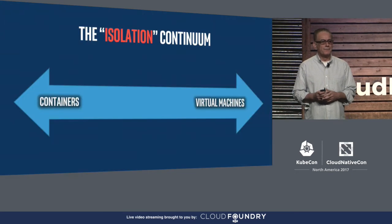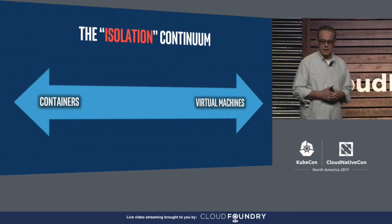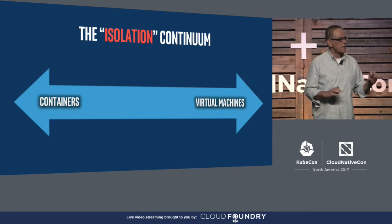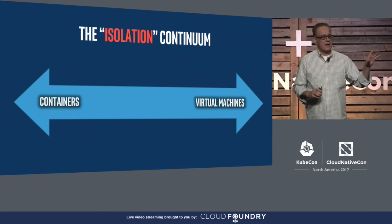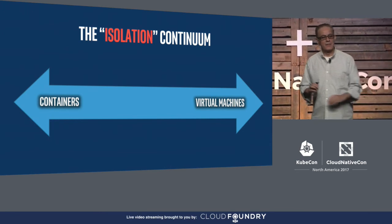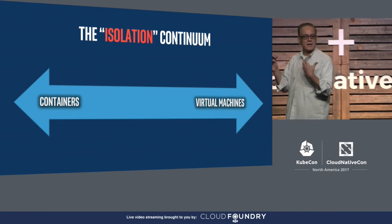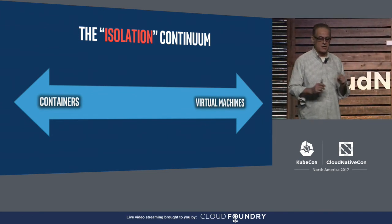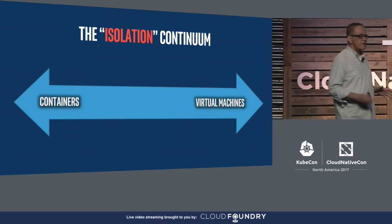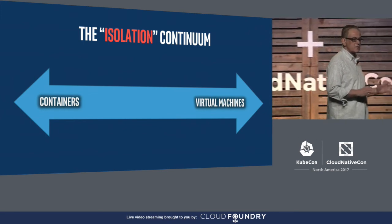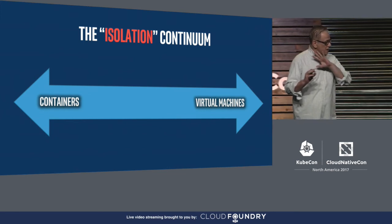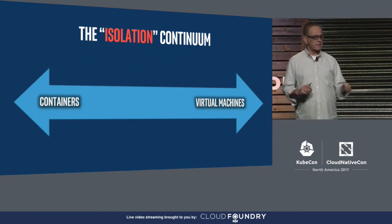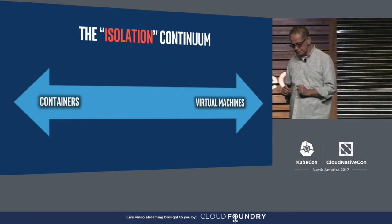When you look at the isolation spectrum, on the one hand you have containers, and on the other end you have virtual machines. Containers are awesome — they are very, very fast, very simple, very easy to use. You can bring them up really quickly, let them down, run your app, whatever you want to do.